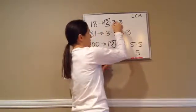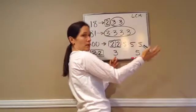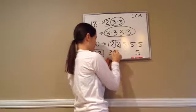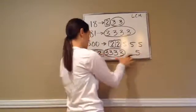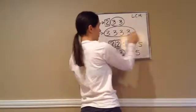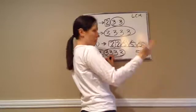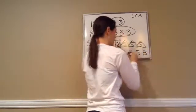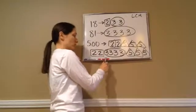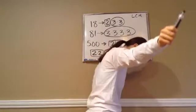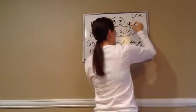Now let's move to 3s. 18 has two 3s, 81 has four 3s, and 500 has zero 3s. Which one has the most? 4 of them. So I'm going to put four 3s down here. Now for 5s: there are no 5s in 18, no 5s in 81, and three 5s in 500. Which one has the most? 3 of them. So: 5 times 5 times 5. We've taken the most of everything, and now you just multiply: 2 times 2 times 3 times 3 times 3 times 3 times 5 times 5 times 5.